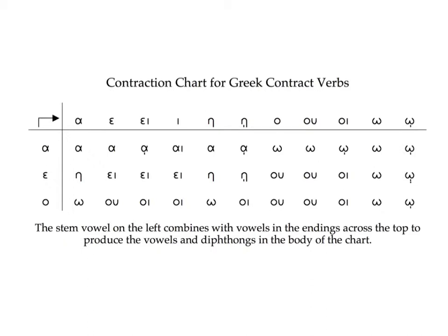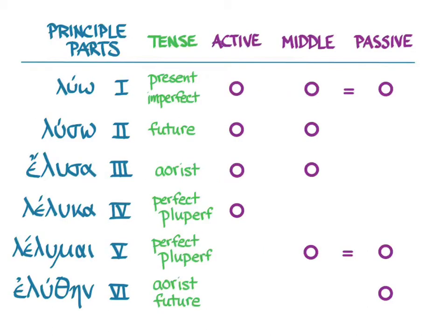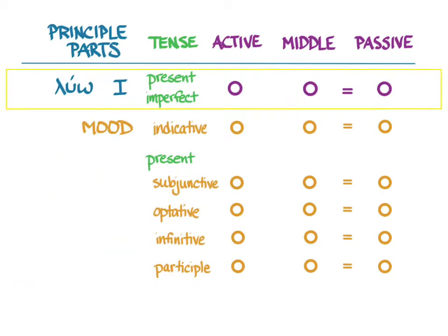This chart shows all of the combinations for contractions with all three different vowels that happen in contract verbs. We've now gotten to the final row, which are the omicron ones. Remember that each principal part is responsible for certain tenses in the various moods. Since contract verbs are only different in the first principal part, we only have to worry about things that happen with the first principal part — active, middle, and passive in the present and imperfect indicative, and the present tense of the subjunctive, optative, infinitive, and participle.